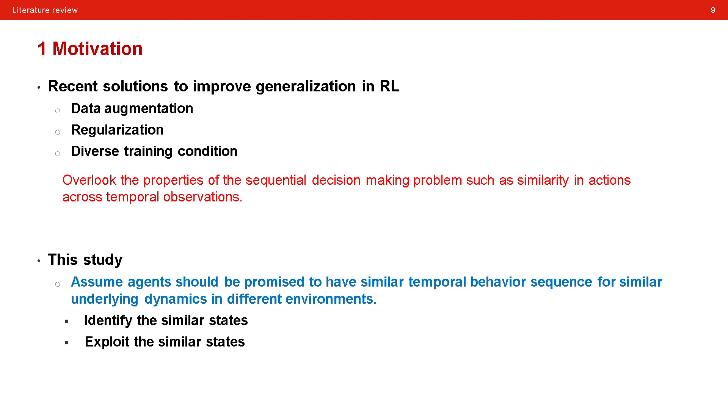Therefore, this study assumes that agents should be promised to have similar temporal behavior sequence for similar underlying dynamics in different environments. And they propose to design two very simple steps to exploit this assumption. The first is to identify the similar states, and the next is to exploit the similar states. Now, let's see how they design these two steps.